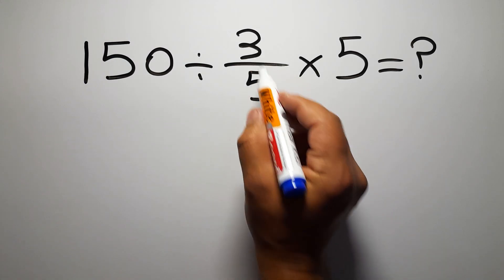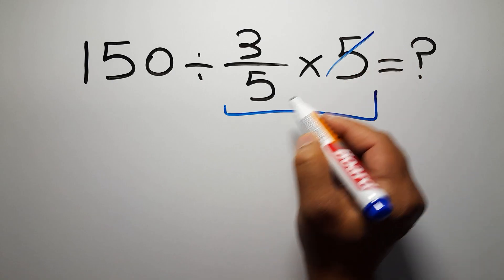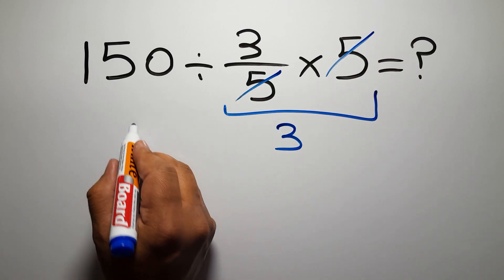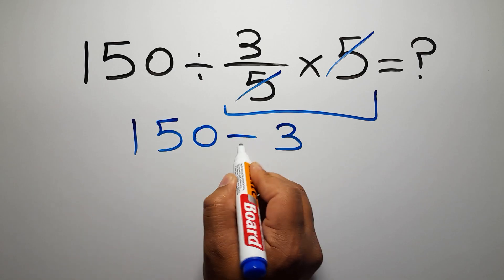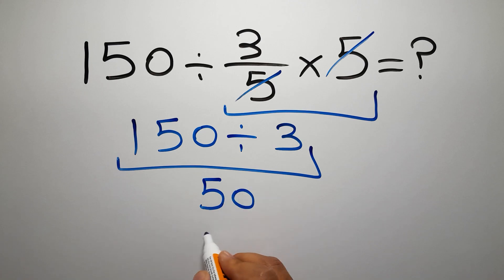First we do this multiplication, 3 over 5 times 5. We can easily cancel this 5 and this 5, so we have just 3. And 150 divided by 3 gives us 50. But this answer is not correct because, according to the order of operations, multiplication and division have equal priority and we have to work from left to right.